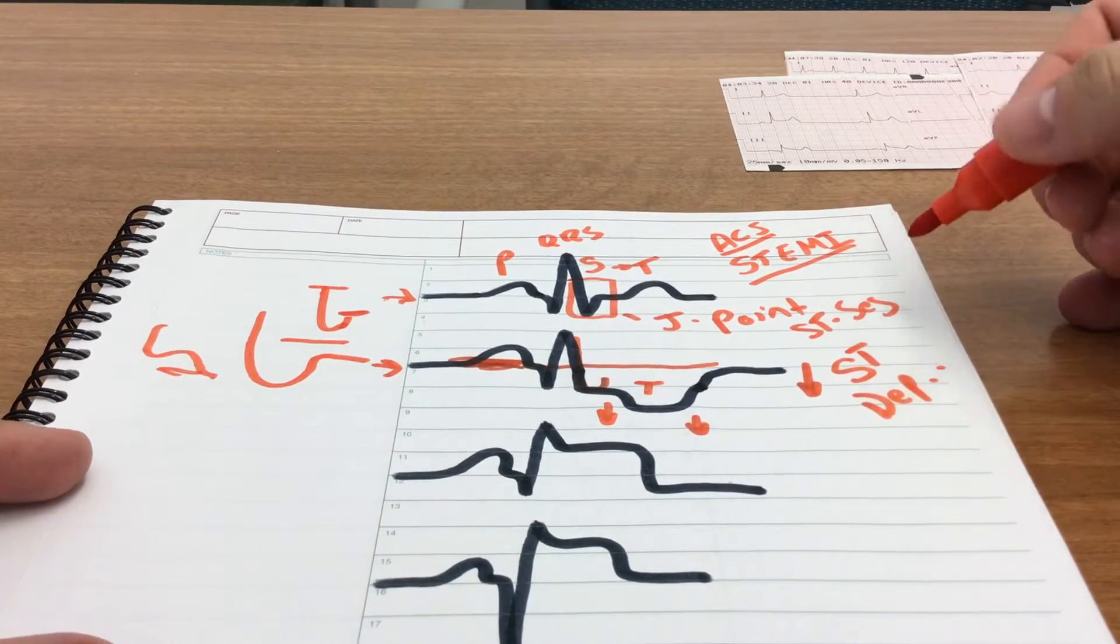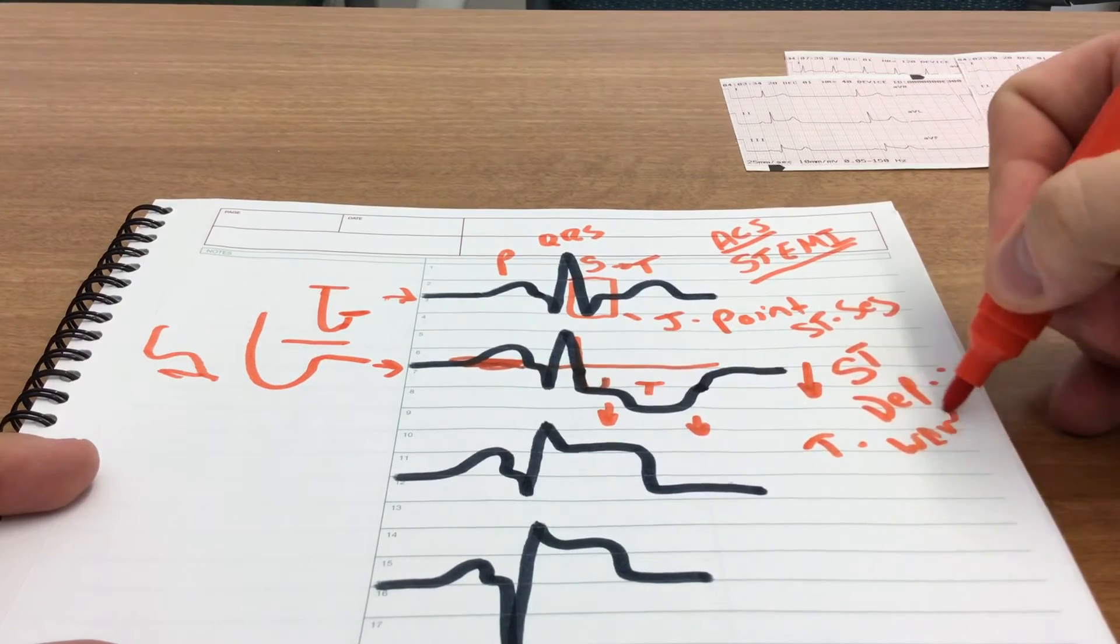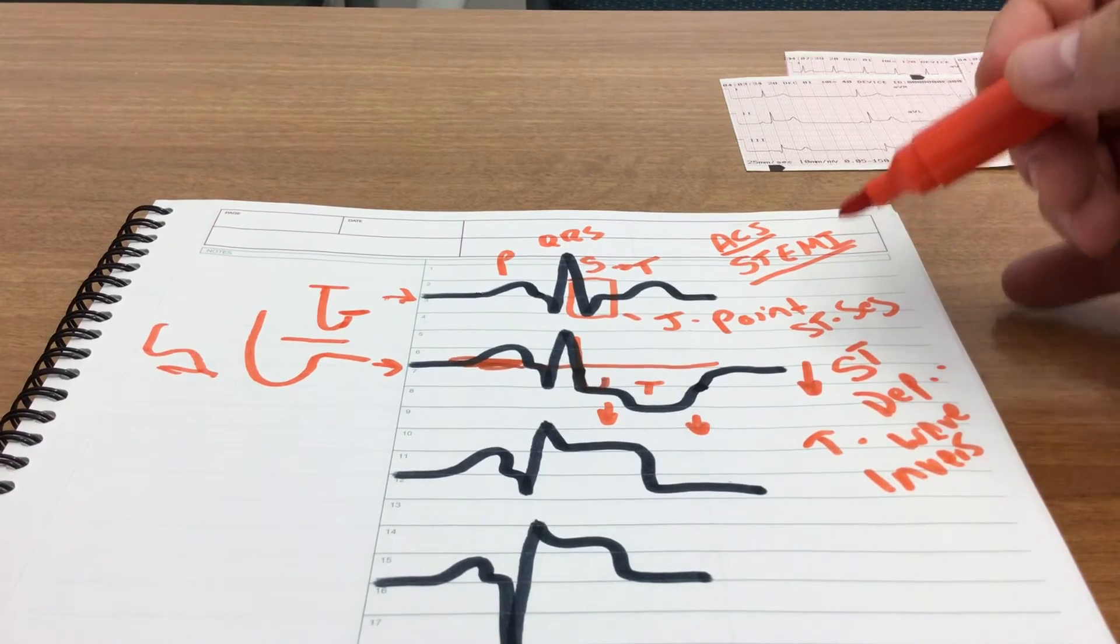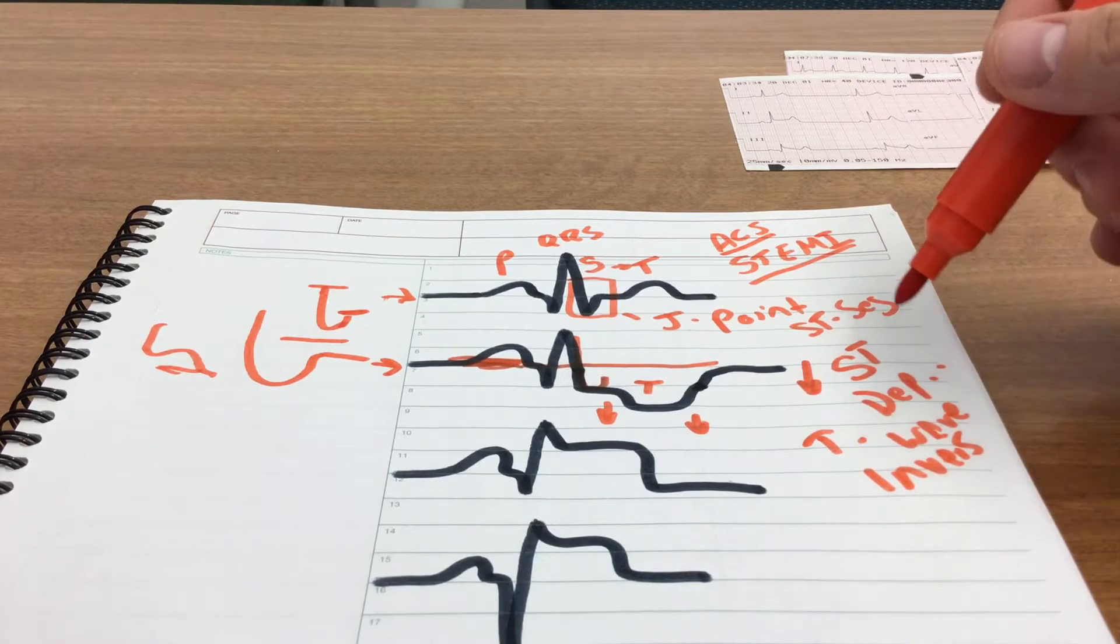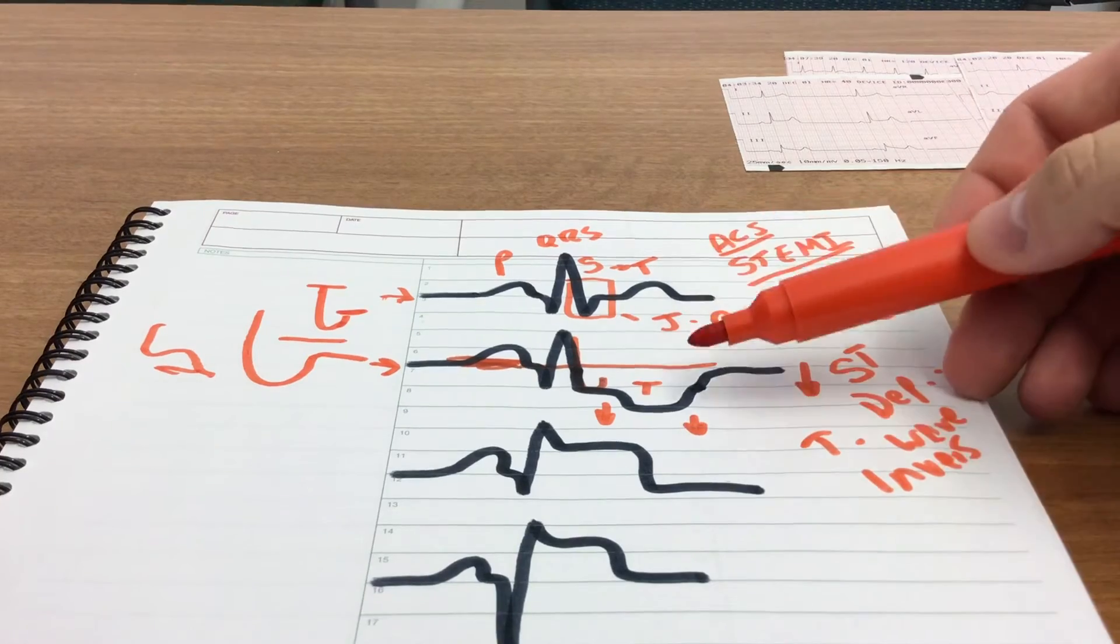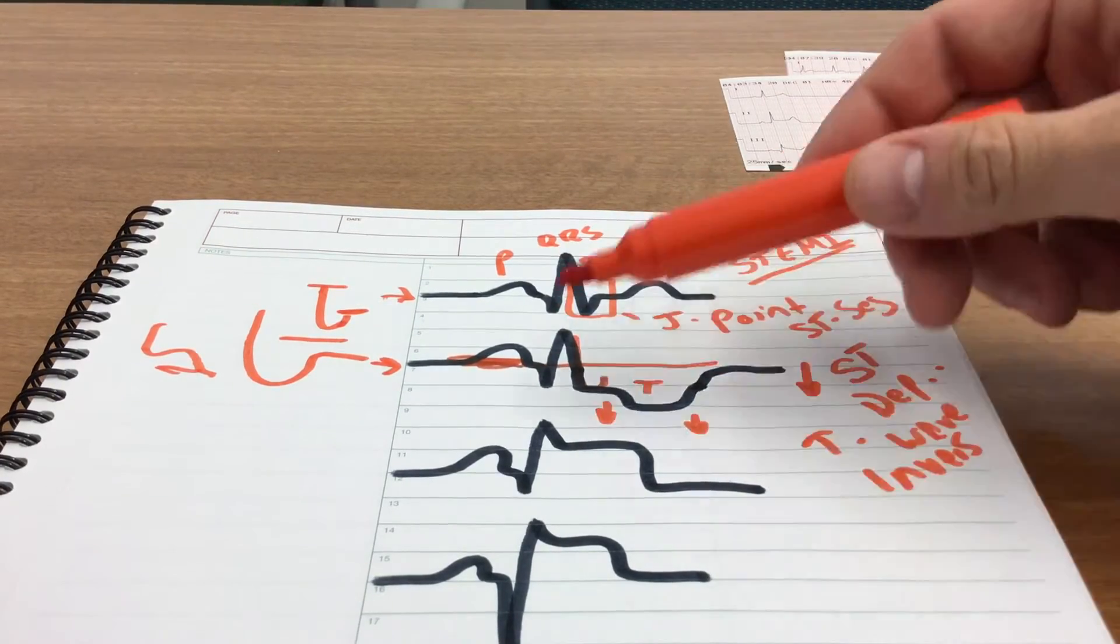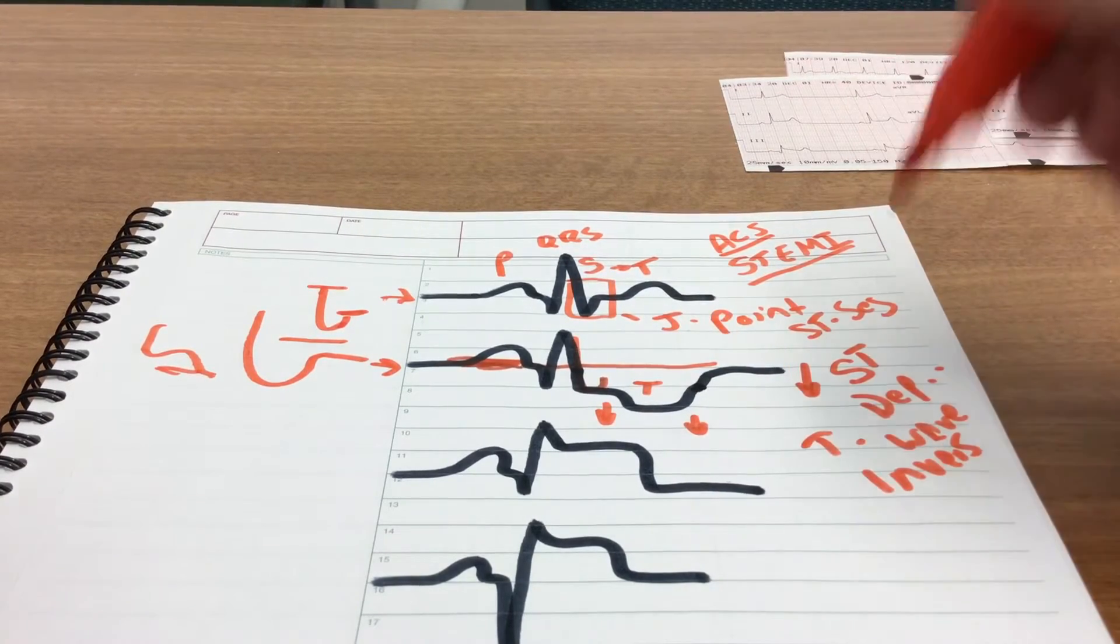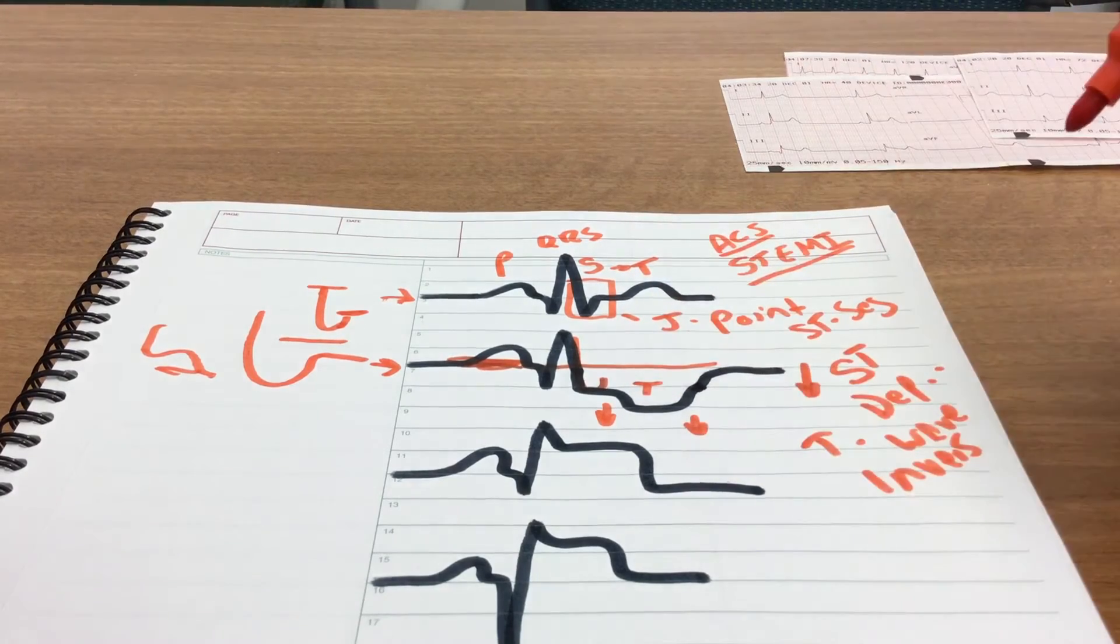ST segment depression, and you can even say T wave inversion here. The T waves are inverted, they're in the opposite direction. ST depression or T wave inversion is indicative in many cases of ischemia. So this is normal, this is an area of the heart that may be potentially ischemic, or it may point to a possible posterior wall STEMI if we see this in certain leads.